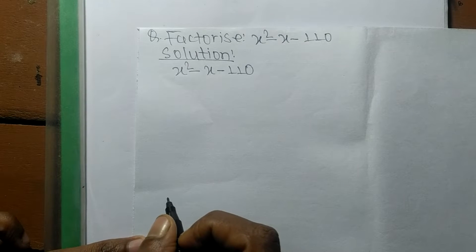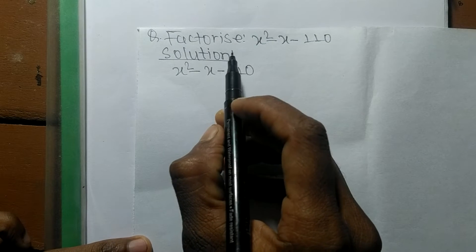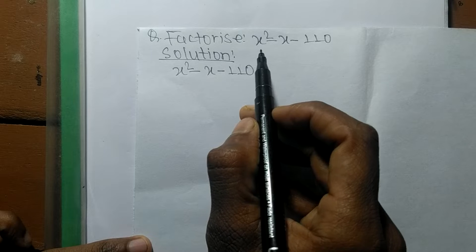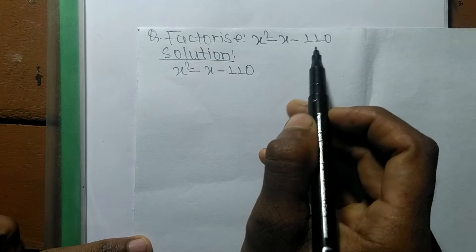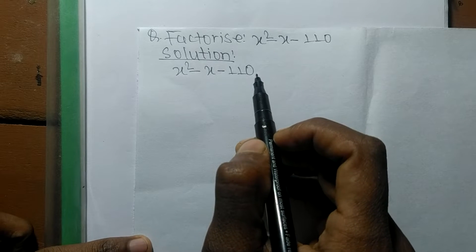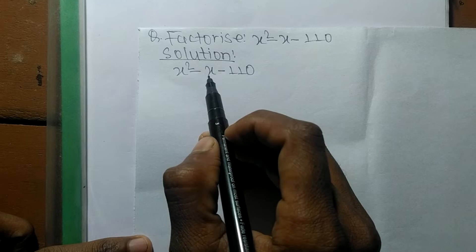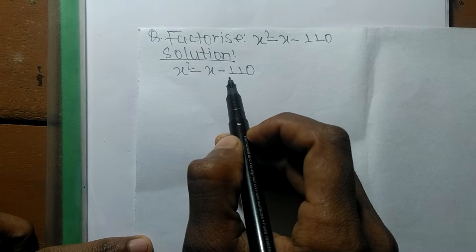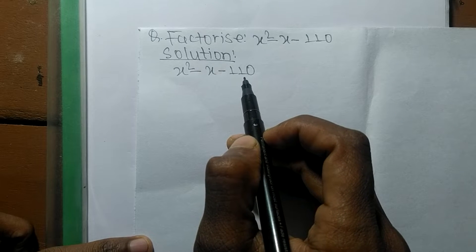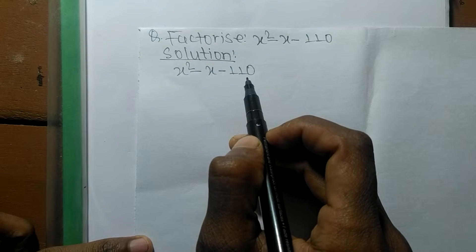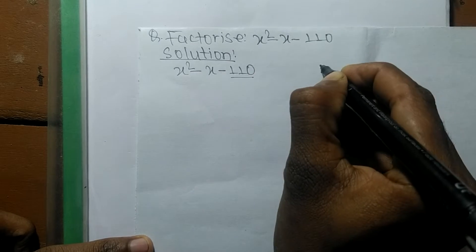Today in this video we shall learn to factorize x squared minus x minus 110. For the solution of x squared minus x minus 110, first of all we have to find out the prime factors of 110.